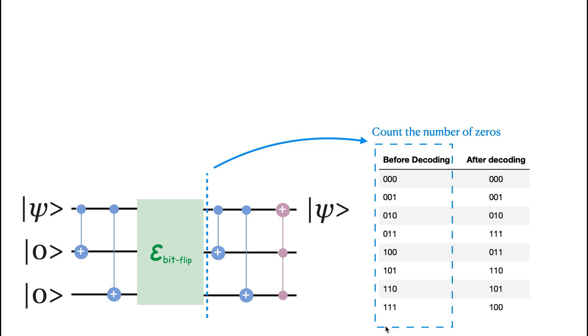The decoder works like a counter, counting the number of the zeros of the output, and then decides what the information of the first qubit was carrying.